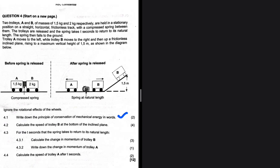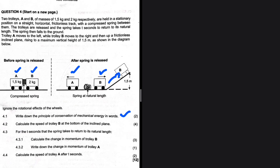So we have two trolleys A and B of masses 1.5 kg and 2 kg. They are stationary, and between the two of them there is a compressed spring. The trolleys are released and the spring takes T seconds to return to its natural length. The spring then falls to the ground. Trolley A moves to the left while trolley B moves to the right, and then trolley B goes up a frictionless inclined plane, rising to a maximum height of 1.5 meters as shown in the diagram. So 4.2: calculate the speed of trolley B at the bottom of the inclined plane.